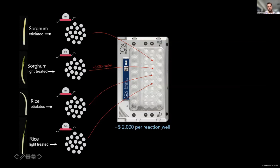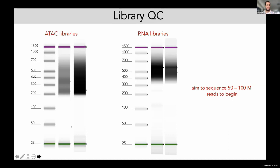The chip is quite expensive — it's $2,000 per reaction — and that's why you want to avoid clogging, because that's money down the drain. On the other side you make ATAC libraries and RNA libraries from your samples. Here is a good version of an ATAC library showing nice histone phasing, though if you don't see that histone phasing it's not a problem — the library can still look fine in UMAP space. Similarly, RNA libraries show a DNA smear, and sometimes you see artifacts on the tape station, but those also don't seem too problematic. You want to aim to sequence around 50 to 100 million reads to begin.